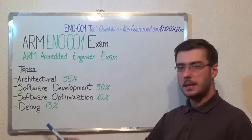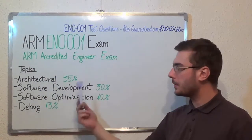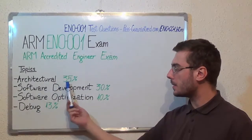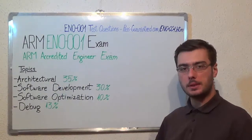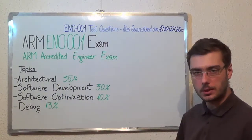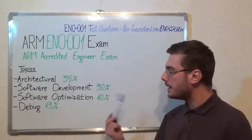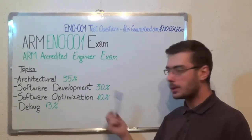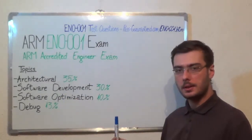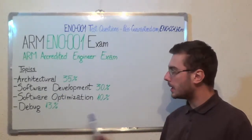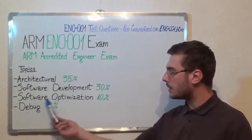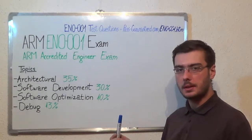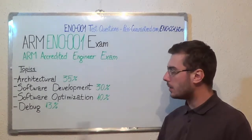Here we have the exam topics. The first one, architectural, which makes up 35% of the total amount of questions. Second, software development with 30%. After that, software optimization with 10%, and the last one, debug with 13%.